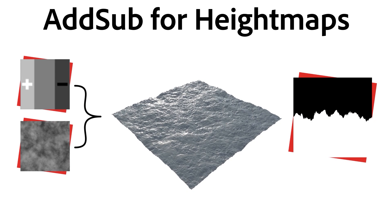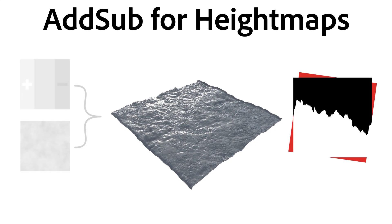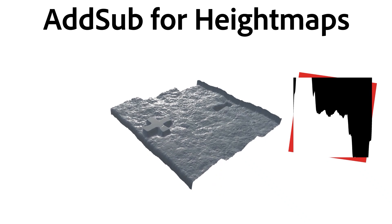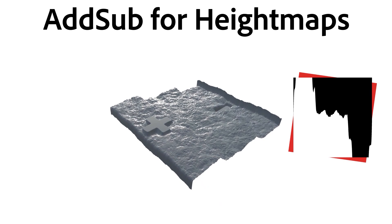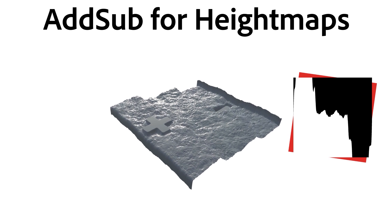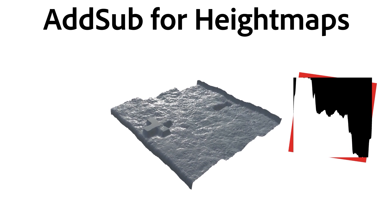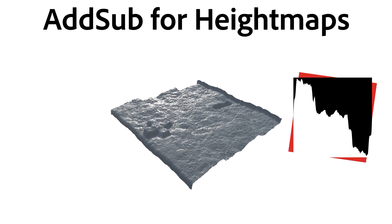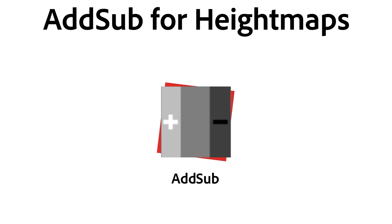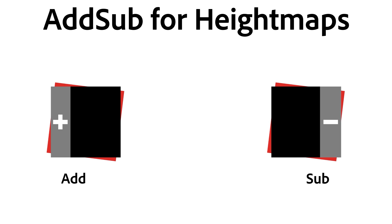With height maps, Add Sub requires a lot more care, as it performs two harsh operations at the same time, pushing both in and out. Standard, contrasted maps will hit low dynamic range limits all the time, so you will have to adjust your top values very carefully. Often, it's easier to split it up and use a separate add and subtract operation for more control.